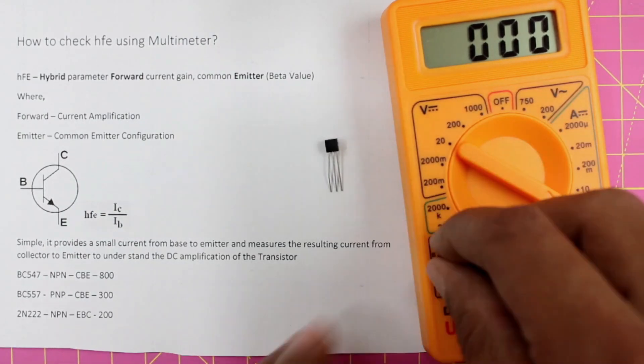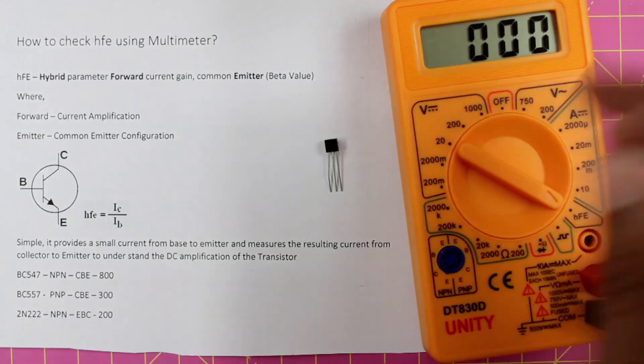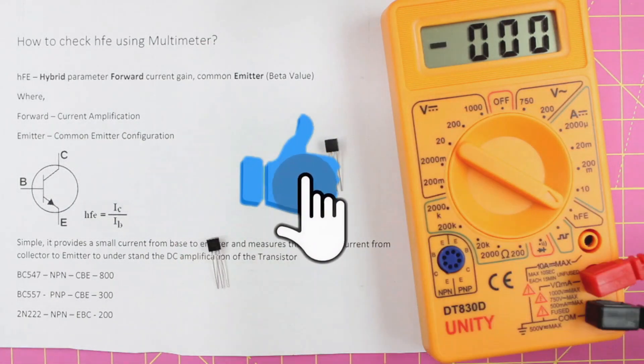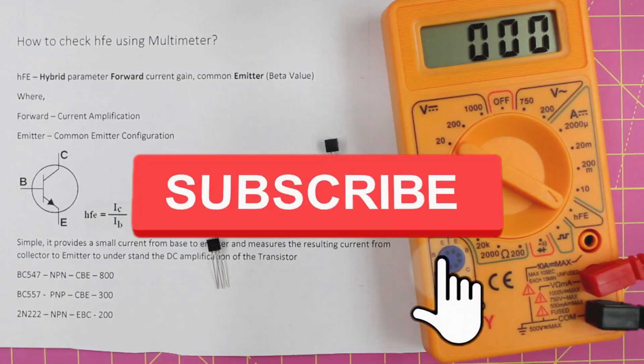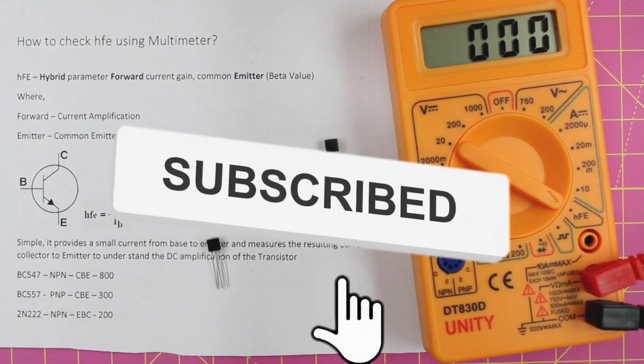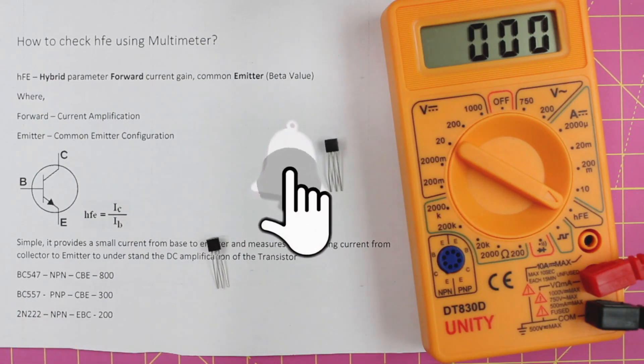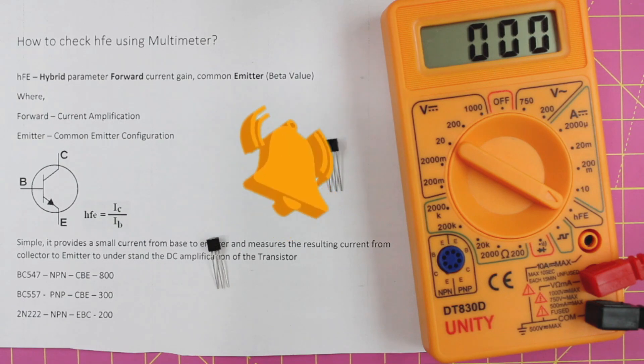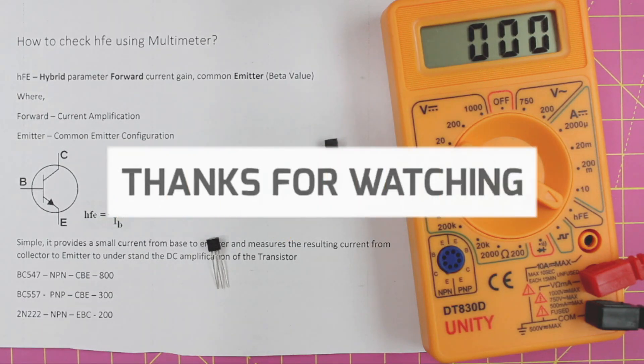So this indicates this method can also be used to figure out if your transistor is an NPN transistor, PNP transistor, or you can even find out the terminals of your transistor. Because only if you insert it in the right slots will you get any reading out of it. So that is it guys, thanks for watching, have a nice day, bye bye.